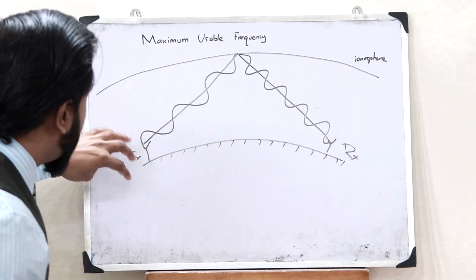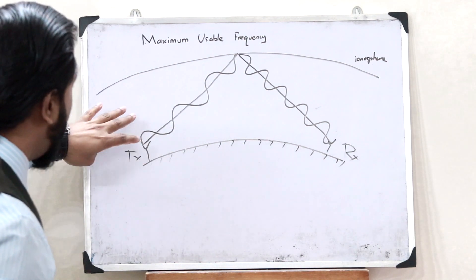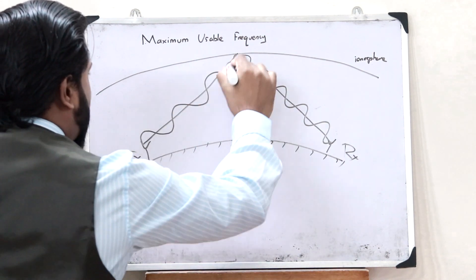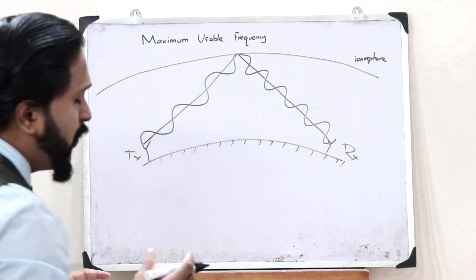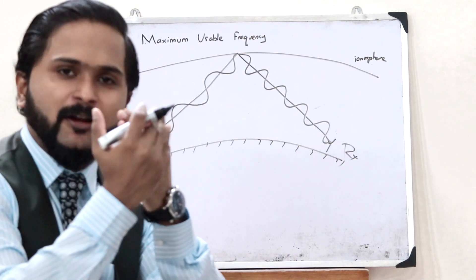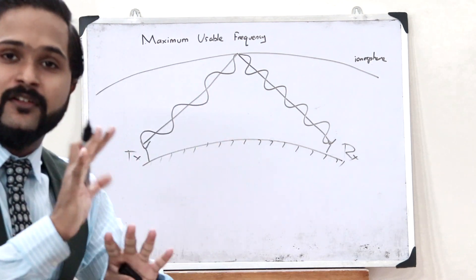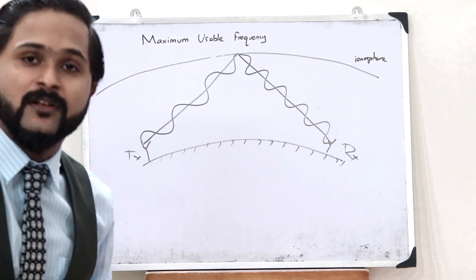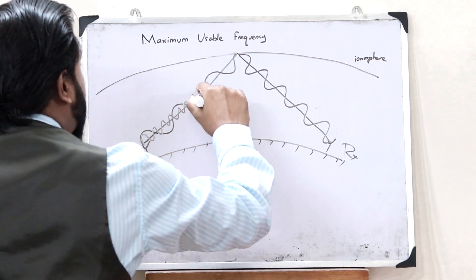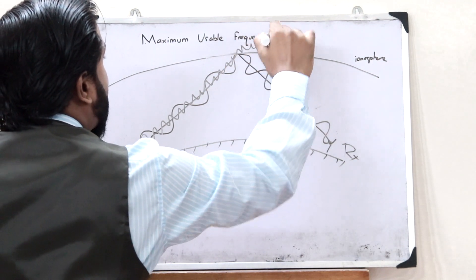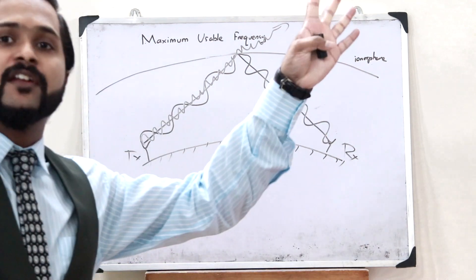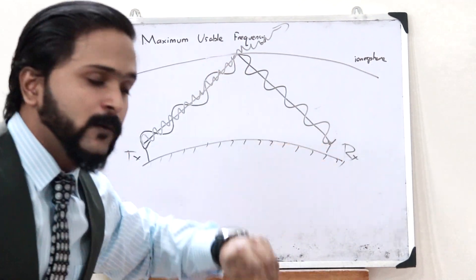Now at the transmitter side, let us gradually increase the frequency of this particular signal. What we observe is that after a particular frequency, this signal will not reflect at the ionosphere. Rather, at a particular frequency value it would penetrate the ionosphere and we will lose that particular signal into free space — it won't reflect back onto the receiver.